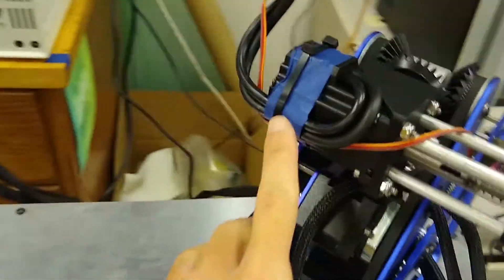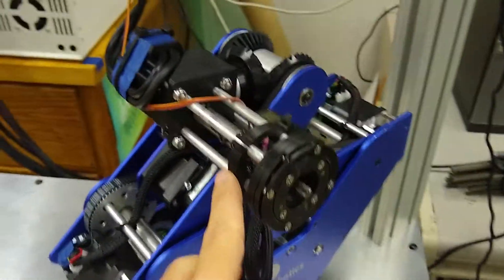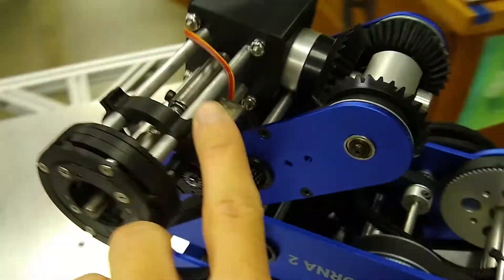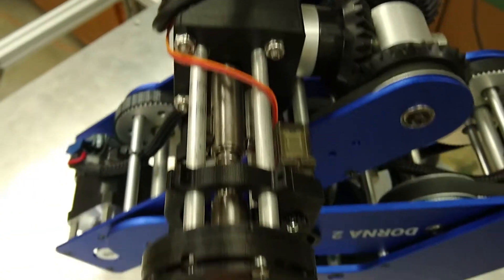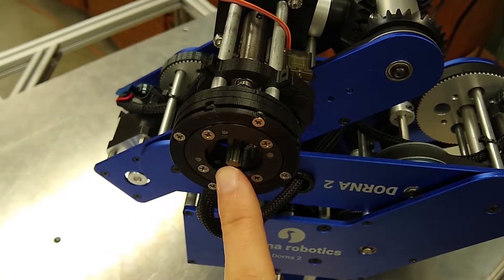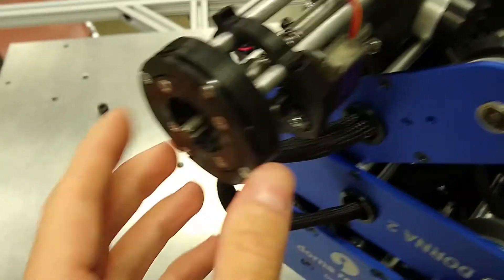We have a stepper motor with encoder on there - we're not utilizing the encoder quite yet. We have a servo motor right here. The way this works is the stepper motor drives this, which will screw and unscrew the bolt. Then we have this servo motor here.